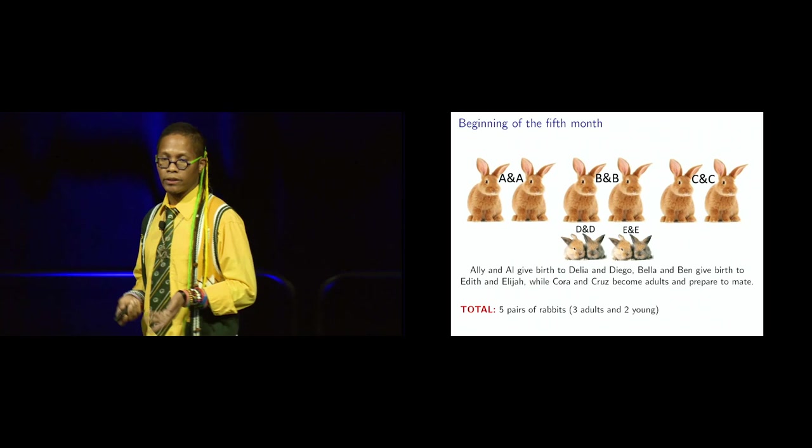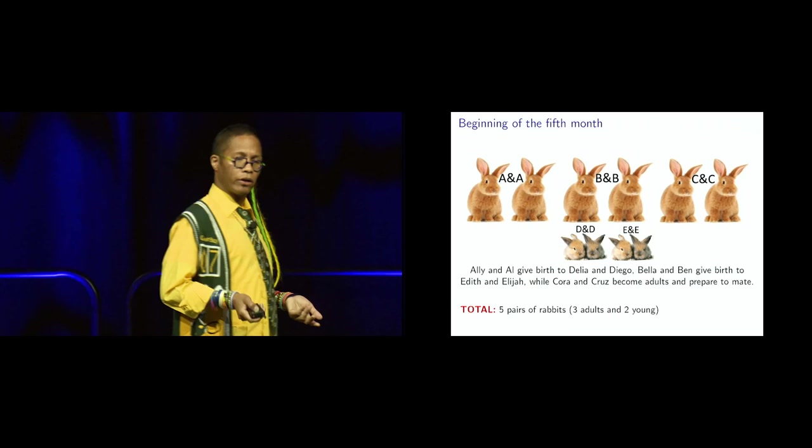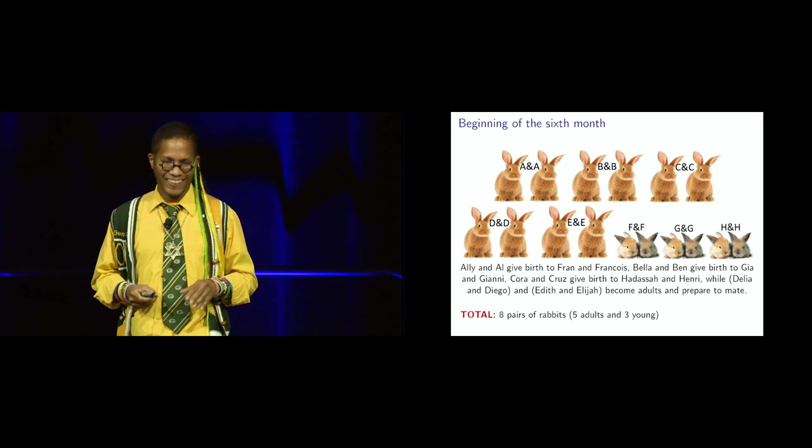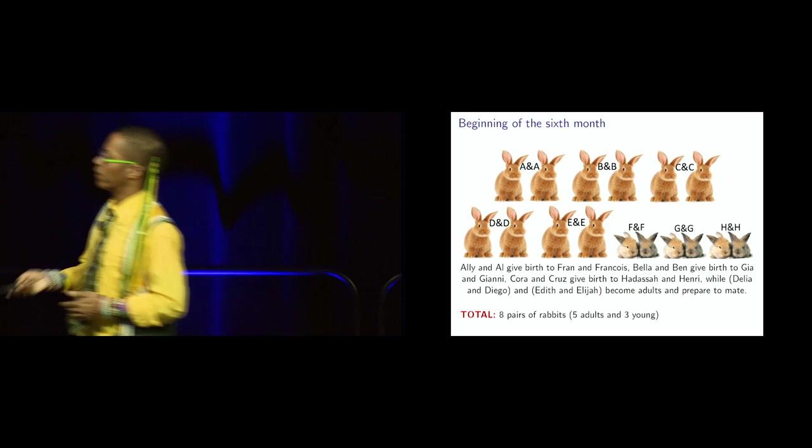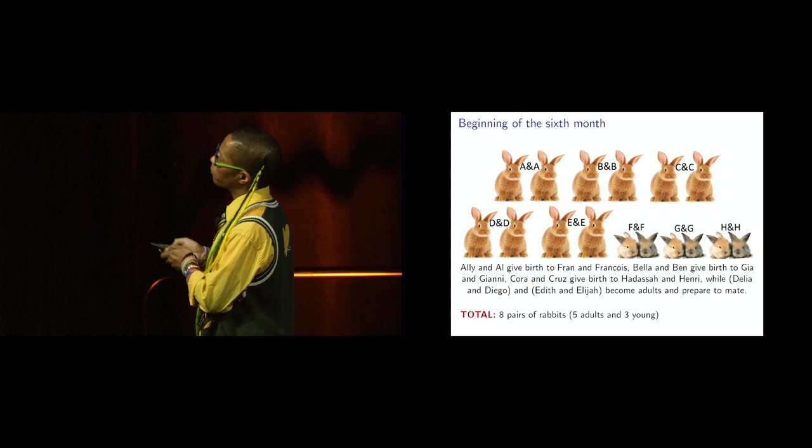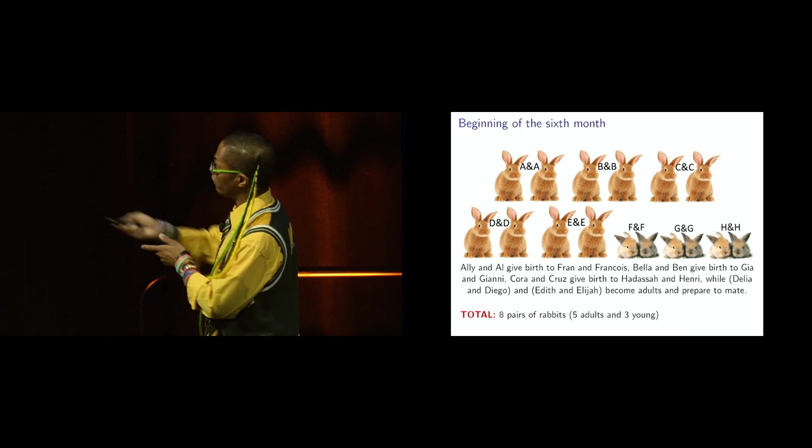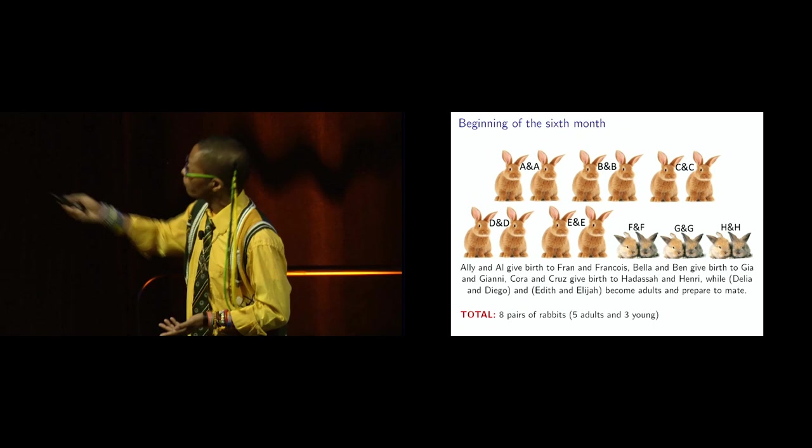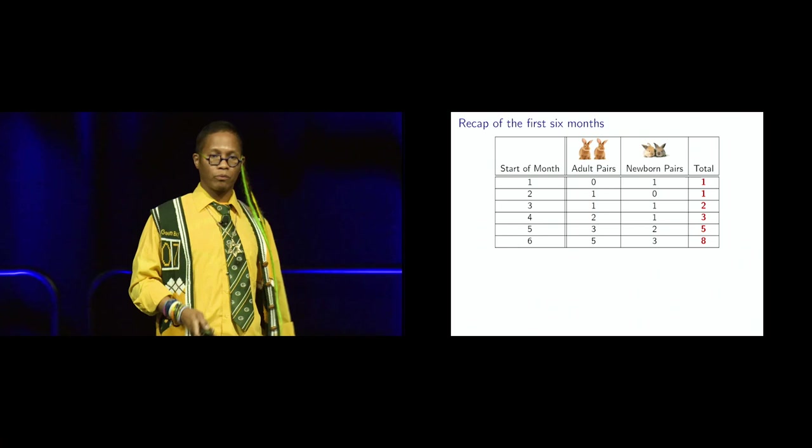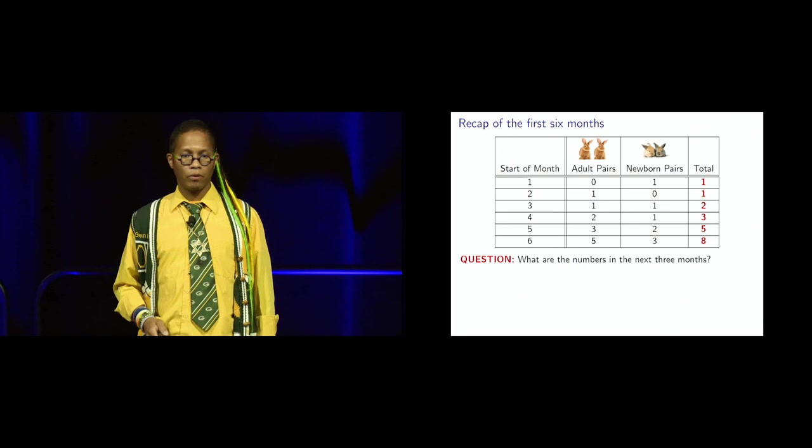Bella and Ben grow up, but they can't, they cannot have incest, oh sorry, they cannot mate yet because they have not been a full sequence of two months. But they're growing up. But Allie and Al have yet another pair of children named Cora and Cruz. So we have Fibonacci number four, which is number three. And now Cora and Cruz are grown up. Bella and Ben give birth probably to Edith and Elijah while Allie and Al give birth to Diego and Dahlia and Diego. I'm not making these names up. This really happened, by the way. I saw this happen. Okay, and now Diego,